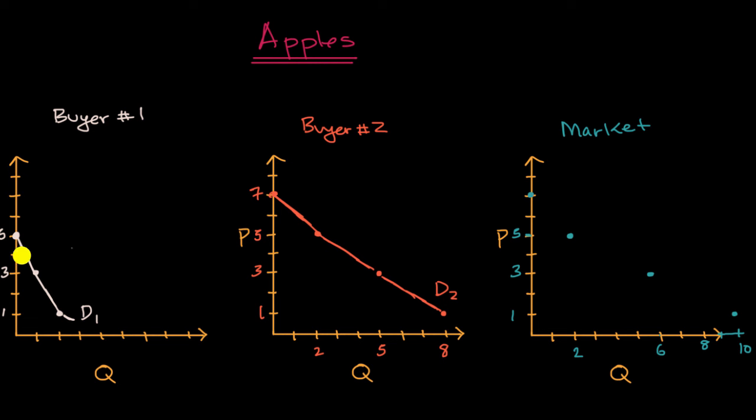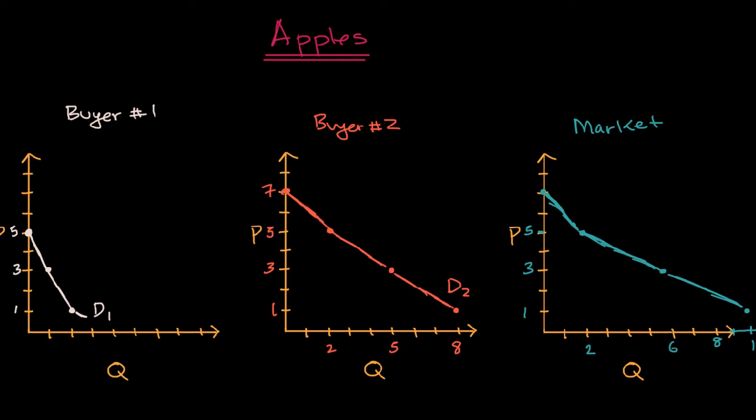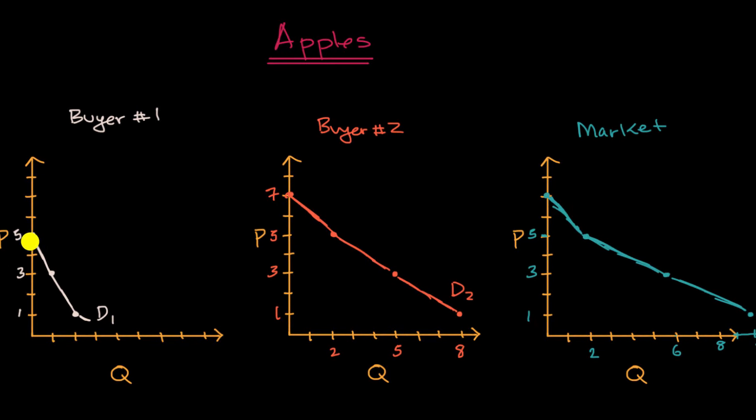And you could sum at any other point, or any other points in between, and what you would do is you would get a market demand curve that looks a little something like this. And you can see, visually, what has happened here. For any price value, we are summing the quantities for all of the buyers in the market. Now here, there's only two buyers. Now if you're doing this in the real world, you might be dealing with millions of buyers. But this is just to understand how a market, or where a market demand curve is actually coming from.